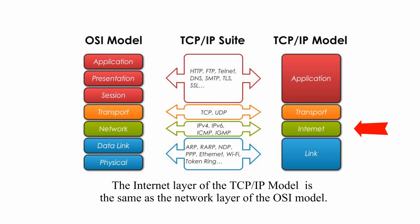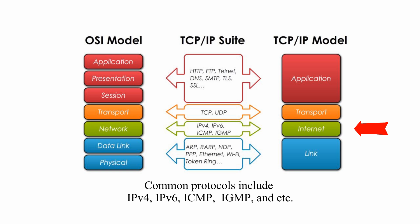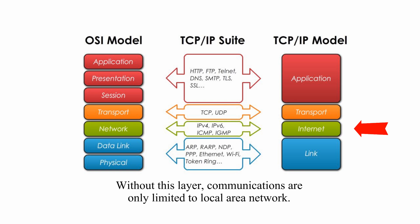The Internet layer of the TCP/IP model is the same as the network layer of the OSI model. Functions at this layer are mainly about IP addressing and routing. Common protocols include IPv4, IPv6, ICMP, IGMP, and more. Without this layer, communications are only limited to a local area network.